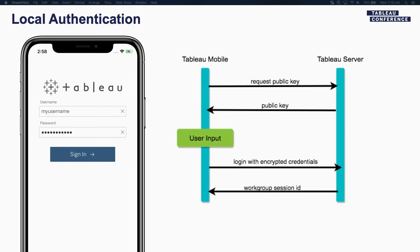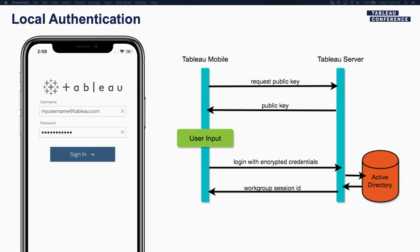So what happens in local authentication? Here's a workflow: when you connect to Tableau server that supports local auth, the user is presented with a prompt where they can type in the username and the password. The password is encrypted using the public key that is provided by the Tableau server. The encrypted credentials are then sent back, Tableau server would then decrypt this, and if the credentials are valid it would issue the work group session ID, which is what we need to access data on Tableau. There's a slight variation of this which is more common among customers, which is using an active directory. In this case, the directory service would do the authentication and validate the credentials rather than Tableau doing it.